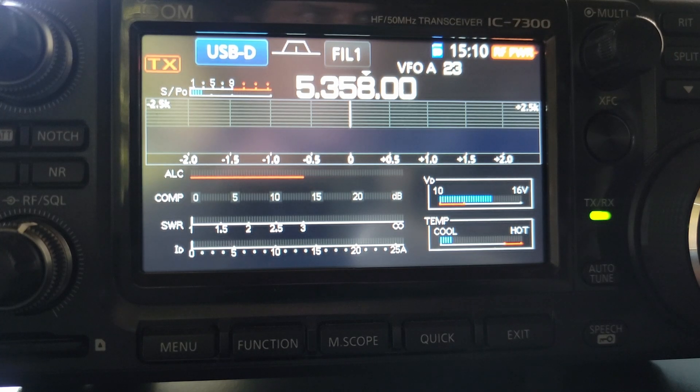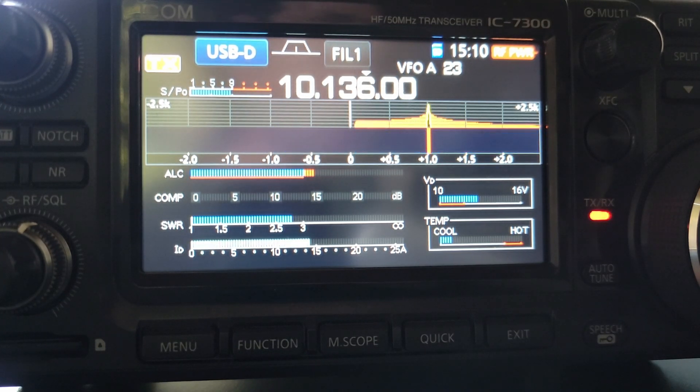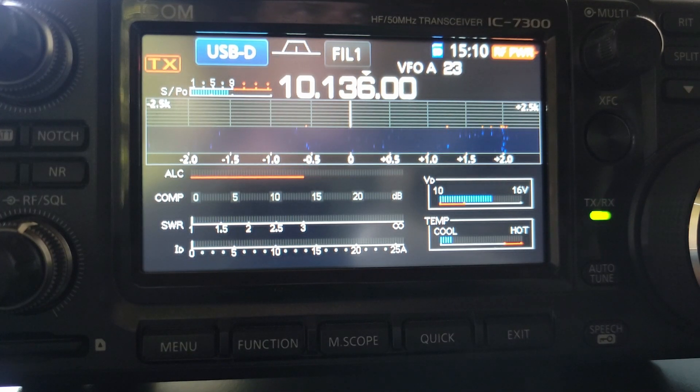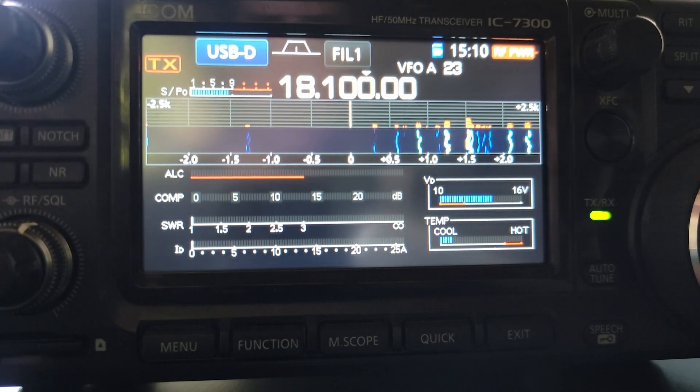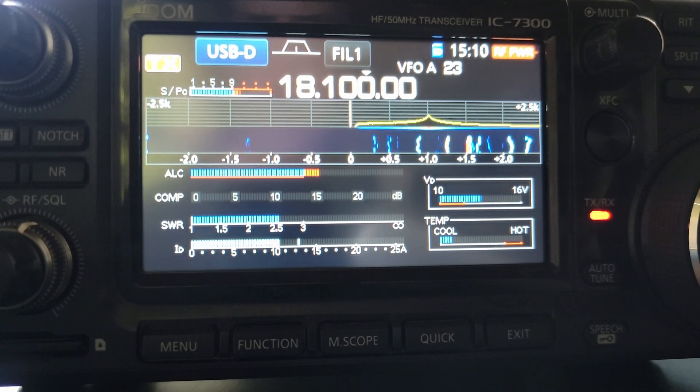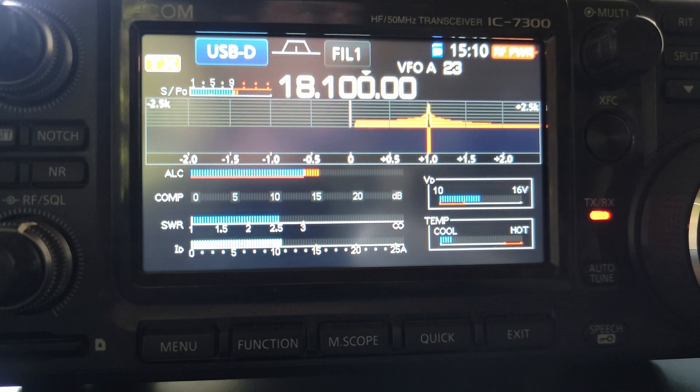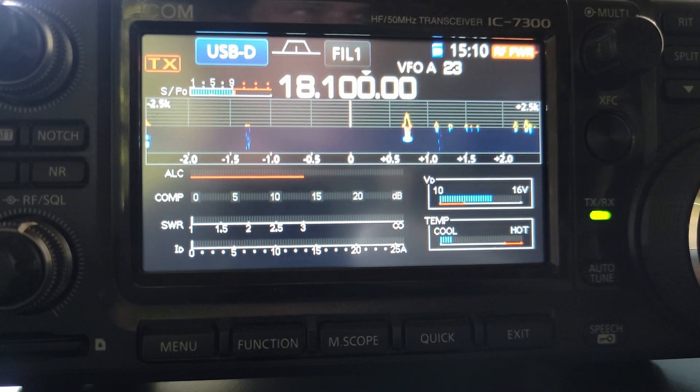We did 40. What's below 40? 30. It'll tune 30. What's below 30? We did 20. 17. Let's try 17. Turn that tuner off. It'll tune 17. This antenna's looking better and better all the time.